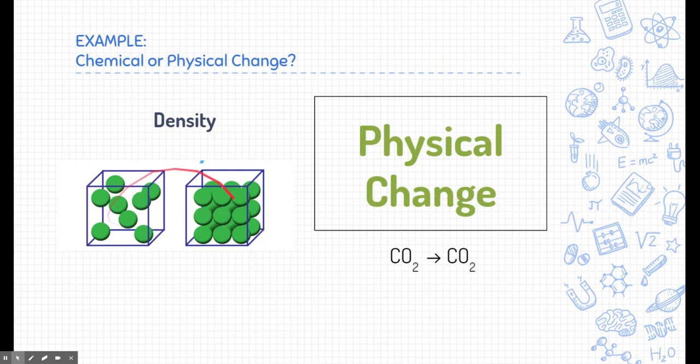Here's an example of two substances. Maybe these substances are carbon dioxide. Here's a lower density carbon dioxide. This could be maybe in a gas form. If we somehow get those substances to compact themselves together, we might be able to cause them to be more dense, but we're not changing the substance itself. It's still carbon dioxide.